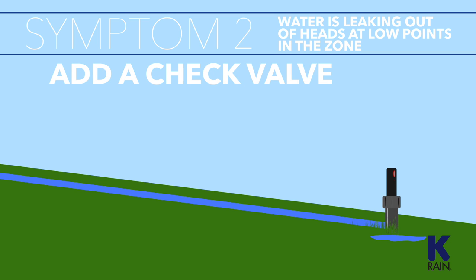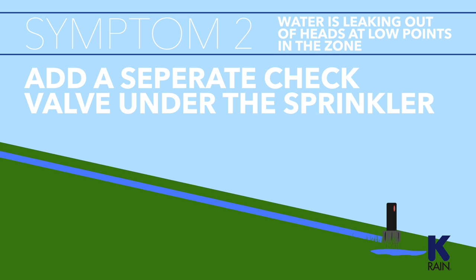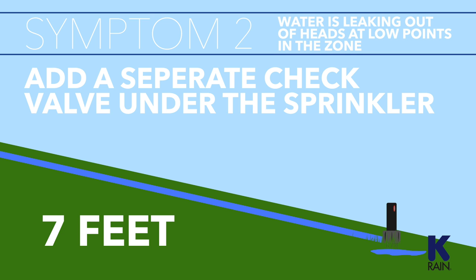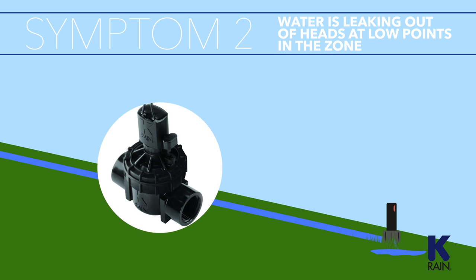Manufacturers sell check valves separately or pre-installed in the check valve version of the sprinkler, so you can either unscrew the sprinkler head and insert the check valve, or swap in a check valve sprinkler for the non-check valve version. For larger elevation changes, you may need to add a separate check valve installed under the sprinkler, as in-sprinkler check valves are not always sufficient. As a rule of thumb, install an under-sprinkler check valve on zones with elevation changes greater than 7 feet. If the wetting around the low sprinkler is continuous, the problem is more likely the valve — a weeping valve that is not fully closed will generate a constant small flow of water that finds its way out through the lowest sprinkler. Open up and check for a damaged seat or a worn diaphragm.